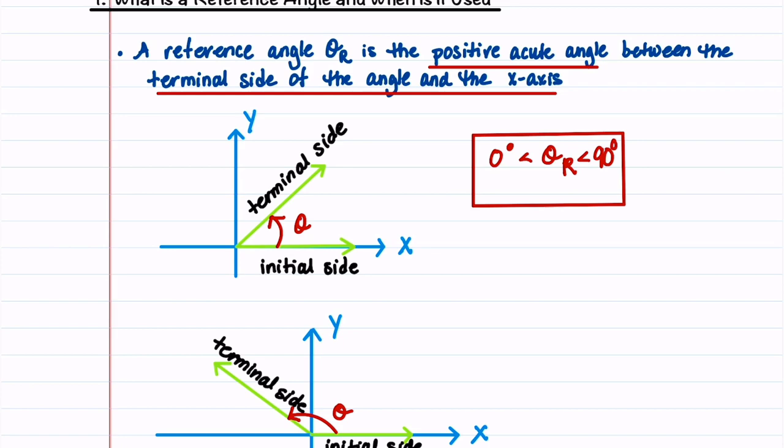And if we think about this in terms of radians, we would say that 0 is less than theta sub r is less than pi over 2.